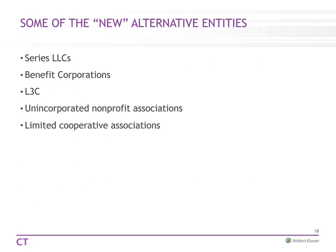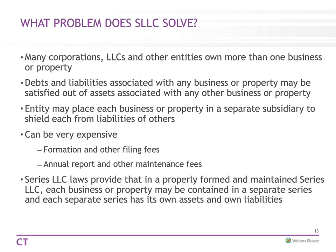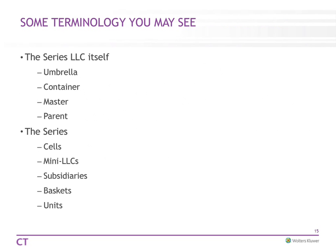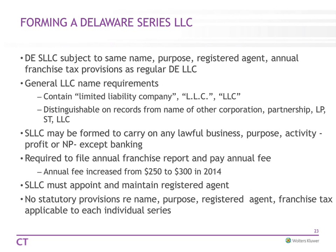Some of the new alternate entities I'm going to talk about include the Series LLC, Benefit Corporations, the Limited Liability Limited Company, Unincorporated Nonprofit Associations, and Cooperatives. The big ones we'll talk about today are the Series LLC, the Public Benefit Corporation, and the Master Limited Partnership. I'm going to take you to the Master Limited Partnership section first, as that's got a lot of interest lately and a lot of our clients have been asking about it. It's a limited partnership but it's traded on a national exchange.